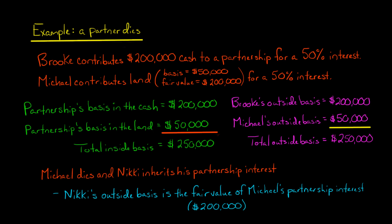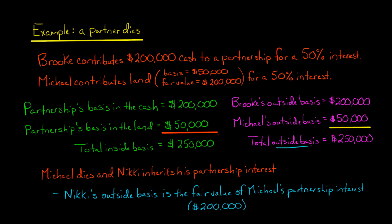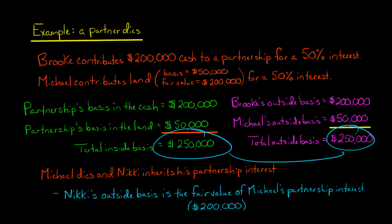Brooke's outside basis is going to be $200,000, and Michael's outside basis is going to be $50,000. So if you add up the outside basis for each partner, you'd have a total outside basis of $250,000. And again, the total inside basis is $250,000 — so they're equal at the start of the partnership.